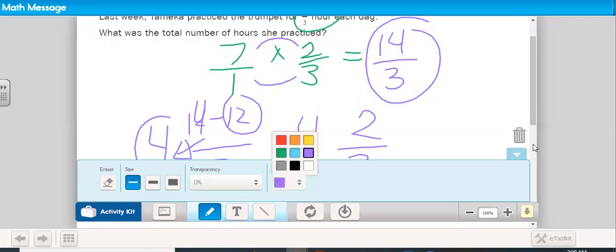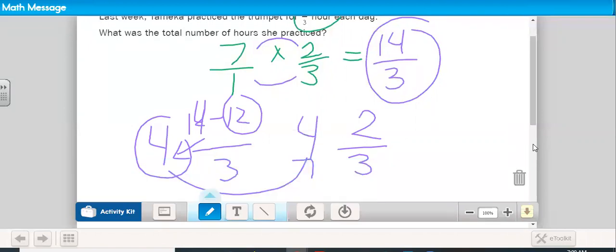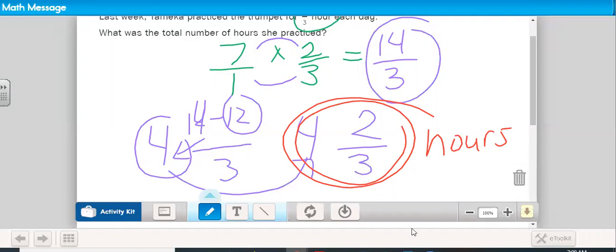Since I did some other circles, I'm going to circle my answer in a different color to show that that's really our answer. But is that completely our answer? No, because we forgot our label. The question was, what was the total number of hours she practiced? Four and two-thirds hours is what we need for our answer. Please open in your workbooks to page 240 and we'll jump right in to question number one.